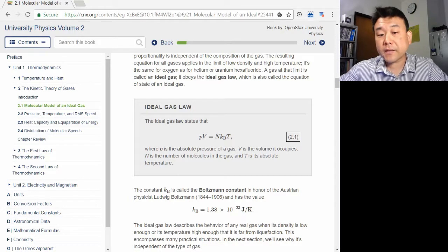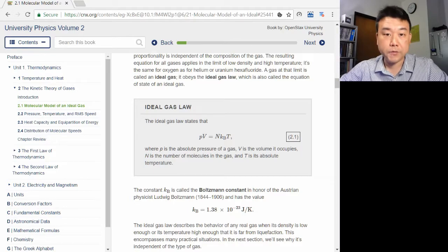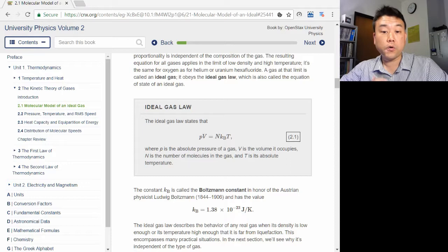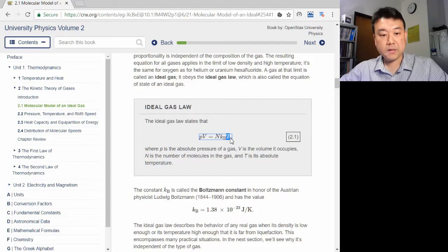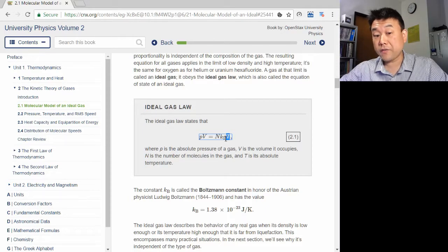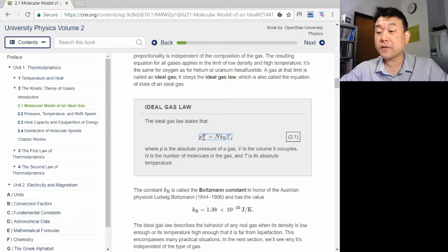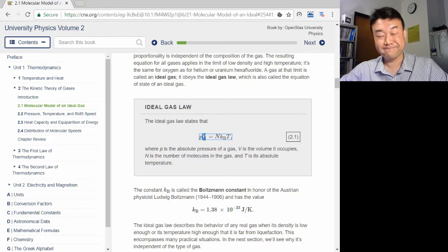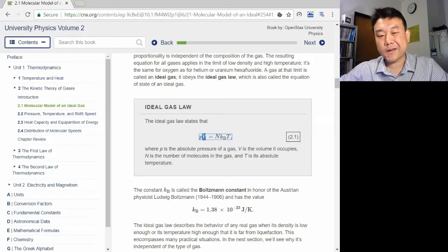This is, in fact, the origin of the absolute temperature scale. On the absolute temperature scale, Kelvin, zero Kelvin is the temperature where an ideal gas would have zero pressure and zero volume. Now, real gases do become liquid at some point before they reach zero Kelvin.